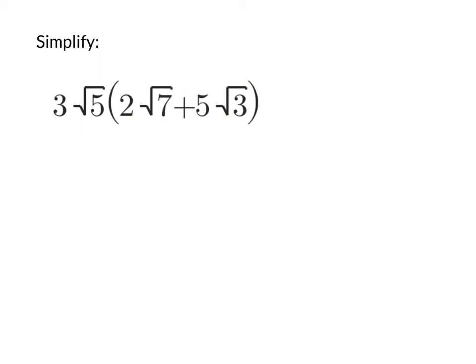Here's one that looks a lot scarier and more intimidating. If we have 3√5 times the quantity 2√7 plus 5√3, we're going to take the coefficient out in front — the entire product 3√5 — and multiply it by every term inside the parentheses, which are 2√7 and 5√3.